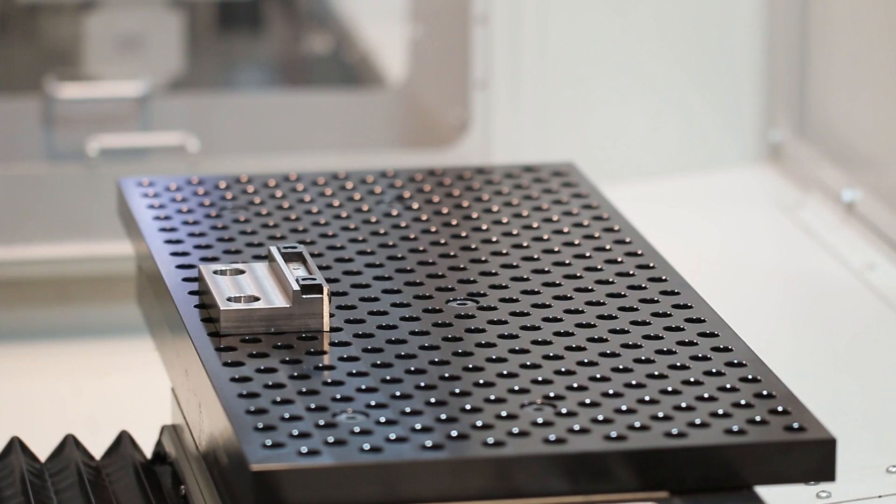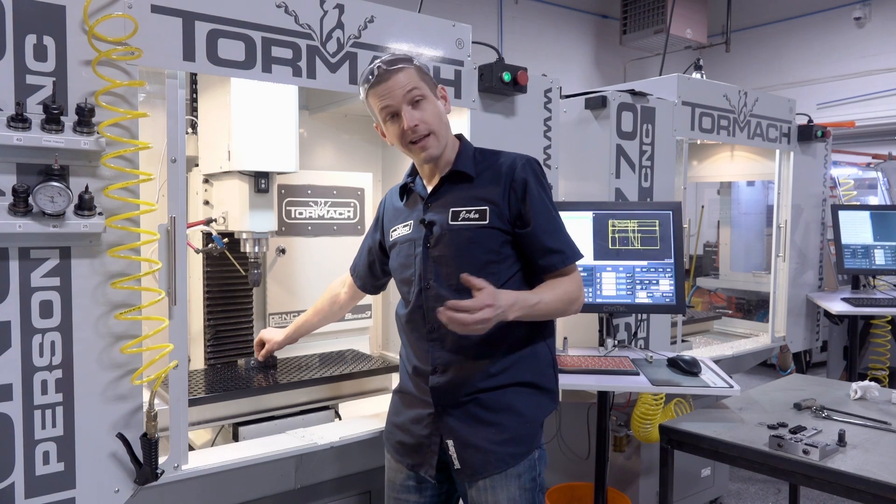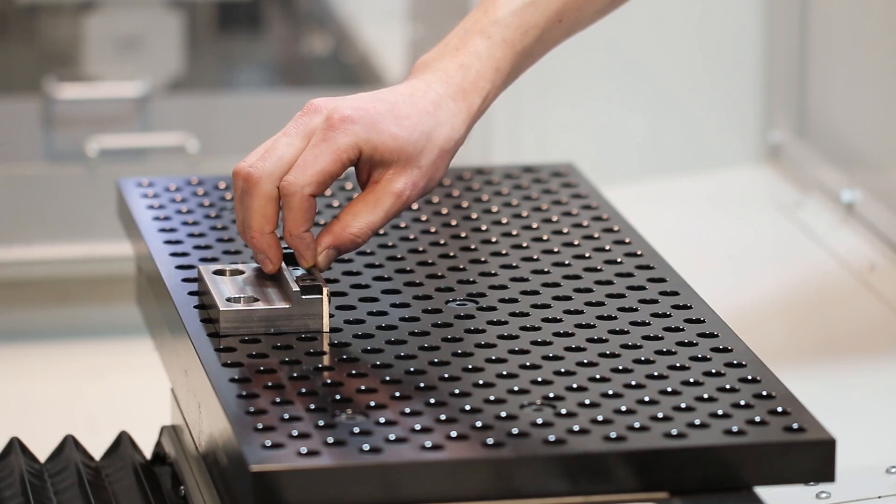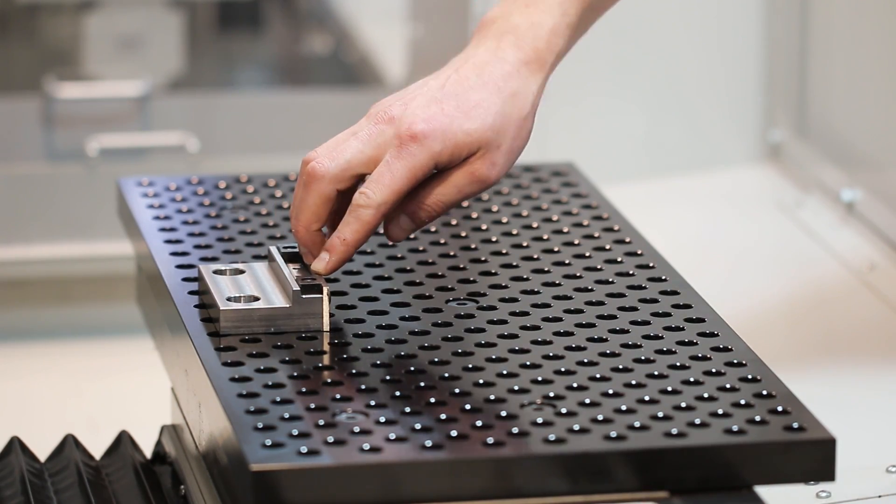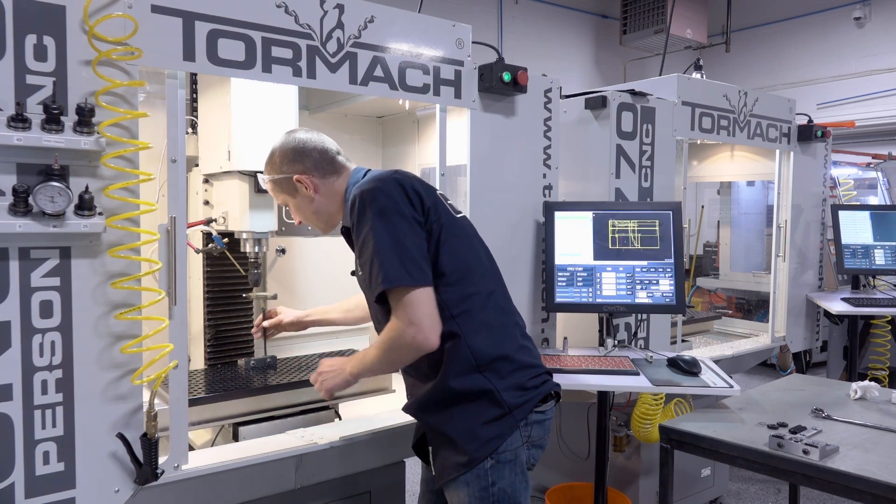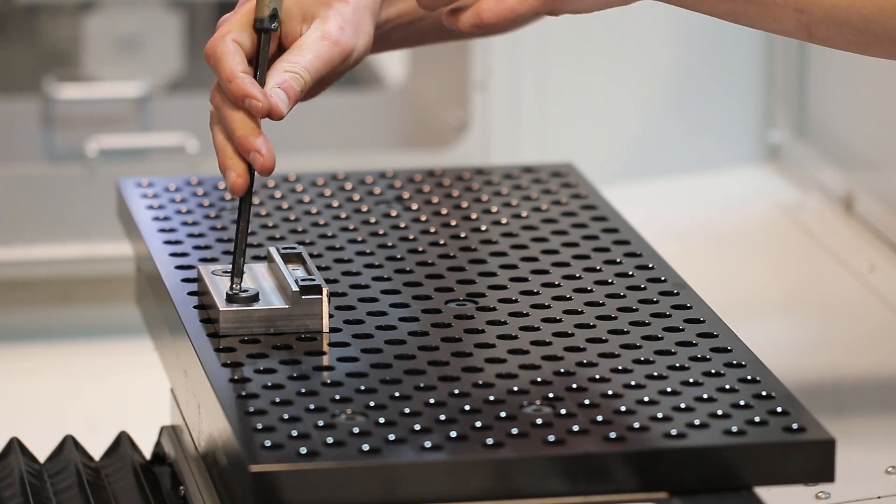Now you can have the parallel secured in or a lot of times we'll use the button head cap screws just to keep the parallel attached but allow it to float slightly so that it acts as a parallel against the fixture plate. Use the included one inch cap screws and secure this down.